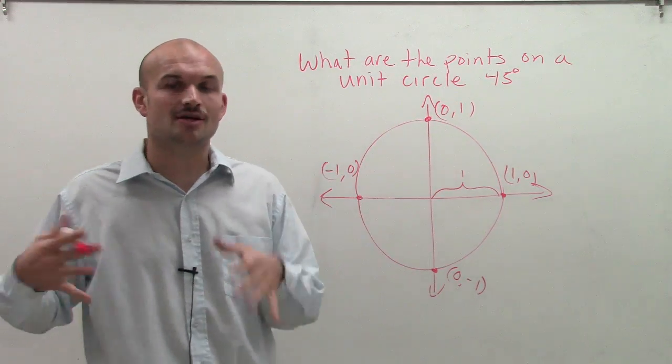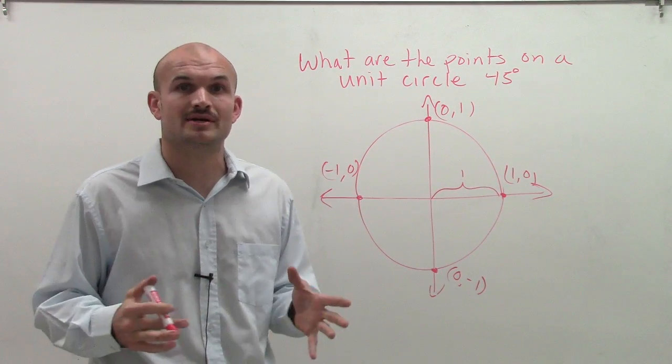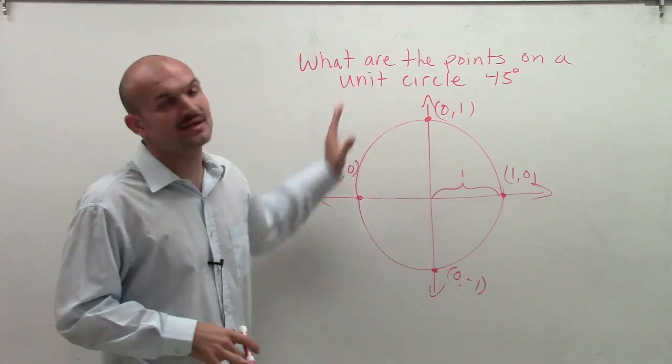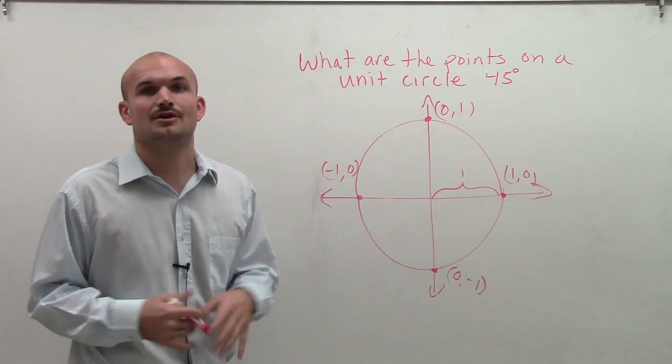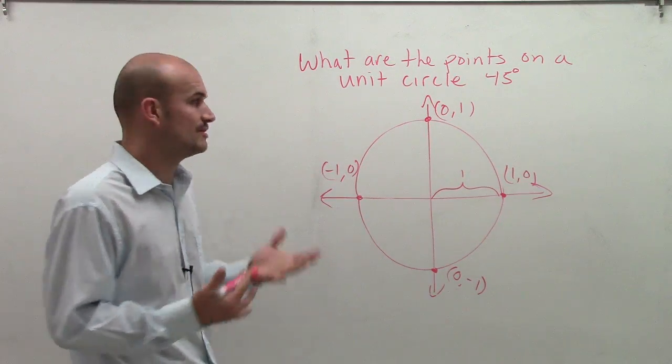Now, what I'm going to go over next is a bit more difficult to understand. We need some background in geometry to find the rest of these points. When finding other points around the unit circle, we'll have to use our geometry background to figure them out.